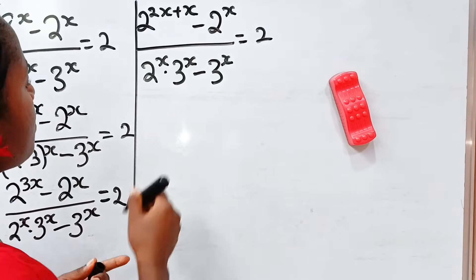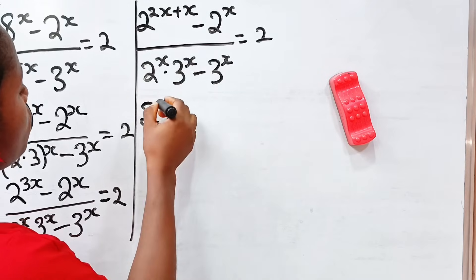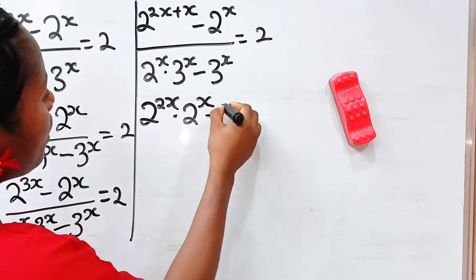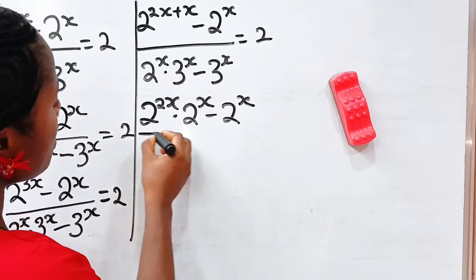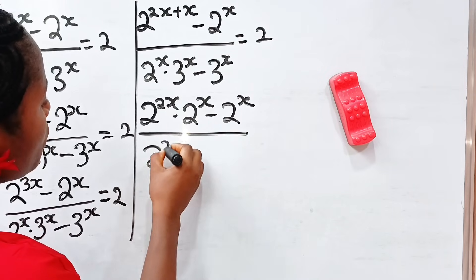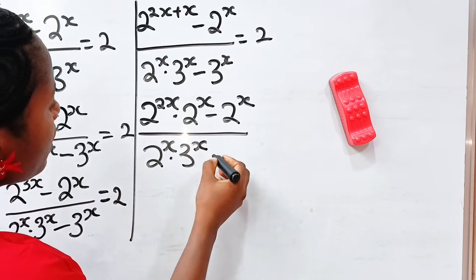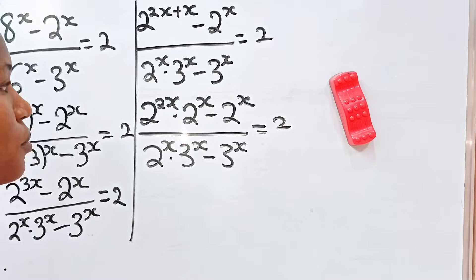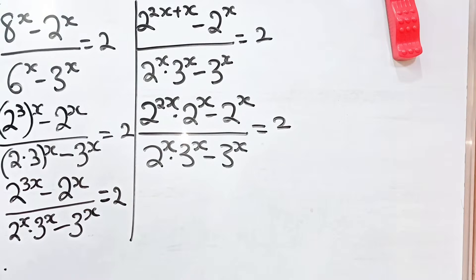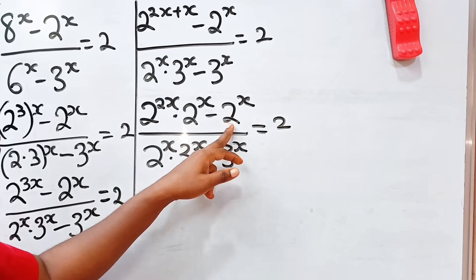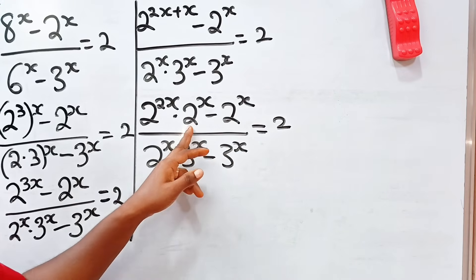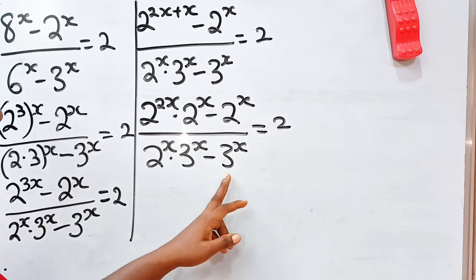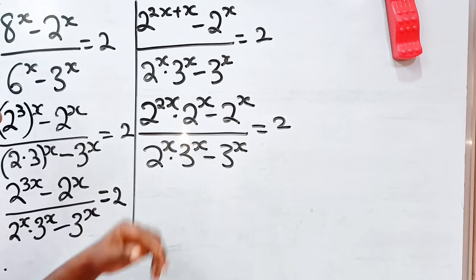So we can write this as 2 to the power of 2x, multiplied by 2 to the power of x, minus 2 to the power of x, divided by 2 to the power of x multiplied by 3 to the power of x, minus 3 to the power of x, is equal to 2. We notice that we have 2 to the power of x in the numerator and 3 to the power of x in the denominator. So let's factorize.